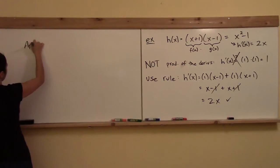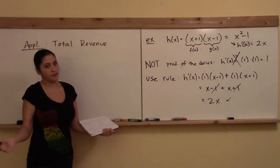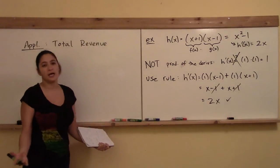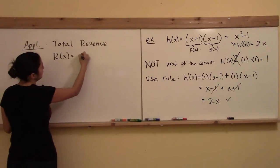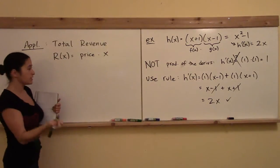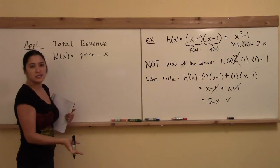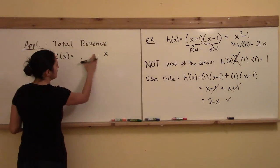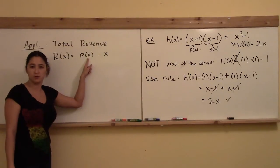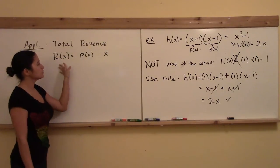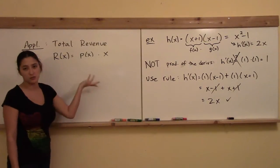That function was pretty easy. Let's move on to talk about a reason why we need to know this. Our applications are those to business. Let's think of a business function involving a product — how about total revenue? If I'm charging a certain price for my item, total money made from selling x items is price per item multiplied by number of items. Total revenue r of x equals price times number of items. Here x is the number of items, and r of x is total revenue.